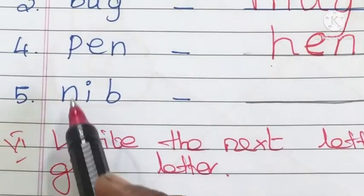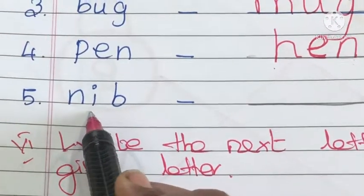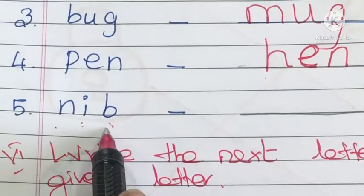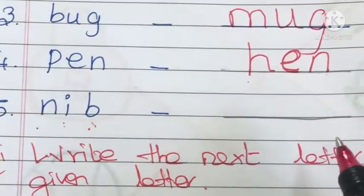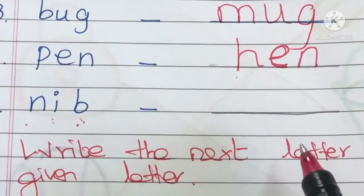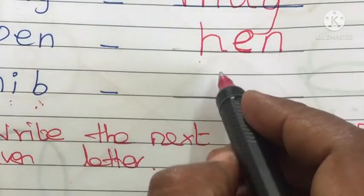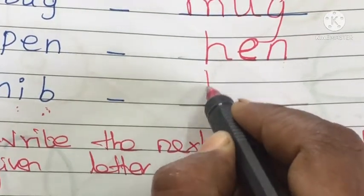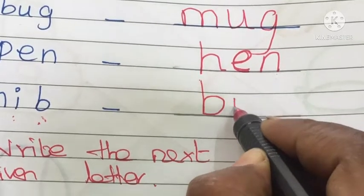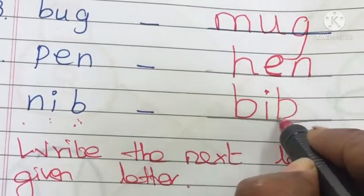See the next word: it is nib — N-I-B. What is the rhyming word for nib? Many words are there. We can write bib. Write bib — B-I-B, bib.